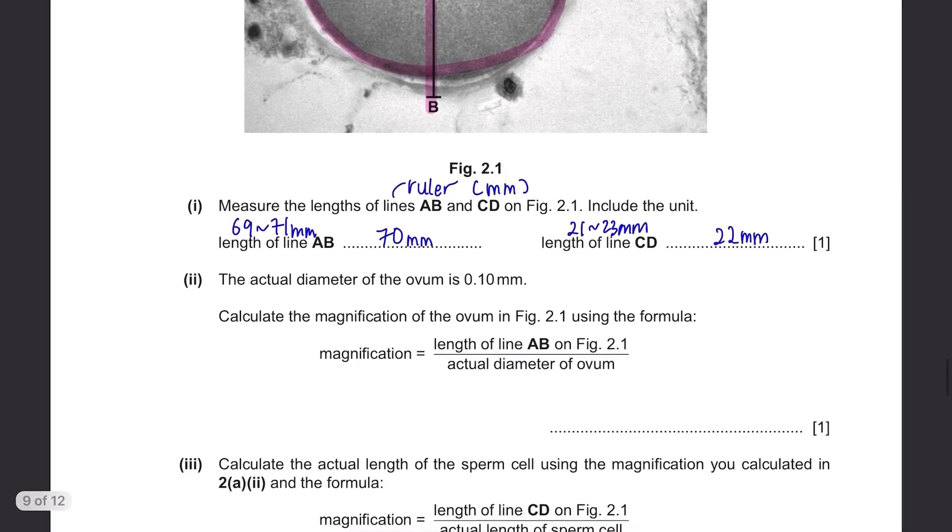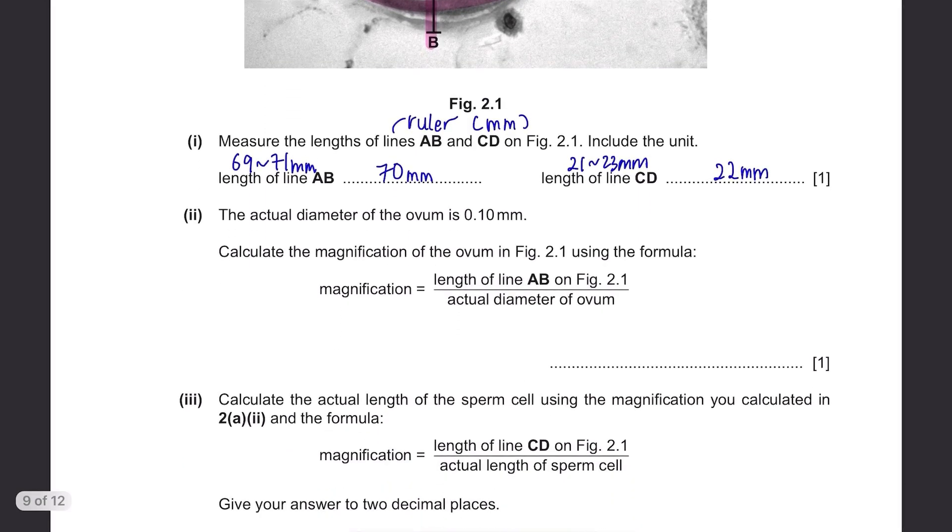The actual diameter of the ovum is 0.1 millimeters. Calculate the magnification of the ovum in figure 2.1 using the formula. Magnification equals to the length of line A-B over actual diameter of ovum. We just need to use the formula and substitute the values. Length of A-B was 70 millimeters and the actual diameter is given. It's 0.1 millimeters. So 70 divided by 0.1. It's 700. Put an X in front to show that it stands for magnification.